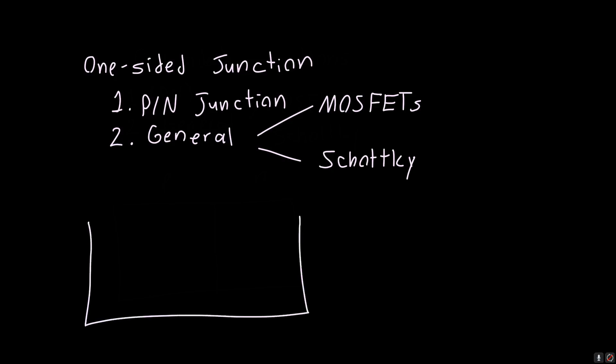We're going to start out with a PN junction just because that's what we know well. A PN junction is going to look something like this: it's got a P side and an N side, with a bunch of positively charged donors on the right-hand side and a bunch of negatively charged acceptors on the left-hand side.